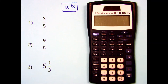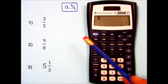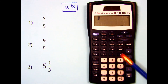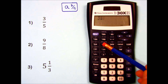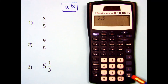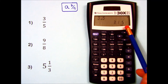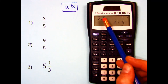The TI-30 X2S — its fraction key is located up here. For problem number 1, I enter 3, fraction key, 5, and when I press Enter the result is down here. They try to make it look a little more like a fraction we would write or type, and it maintains what you entered up in the first line.